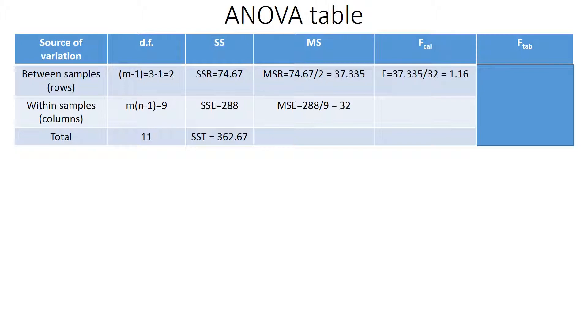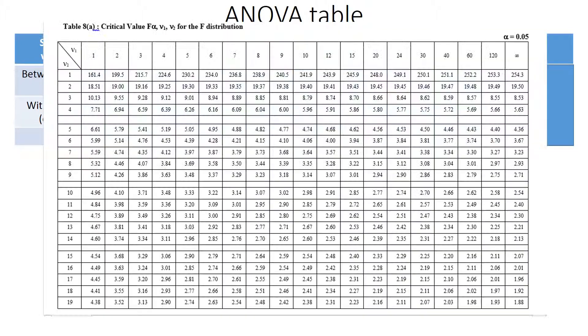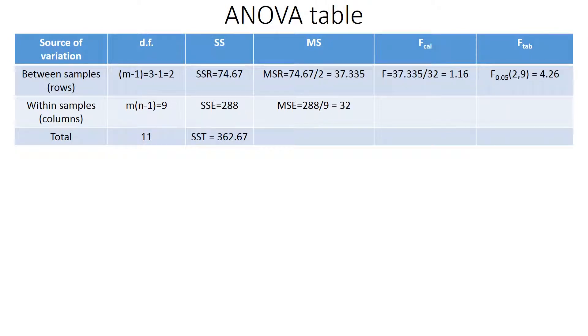Now let's go and compare the calculated value with our values from the F table. We had degree of freedom 2 and 9, right? 2 for M minus 1 equals 2, and the second is degree of freedom 9. So 4.26 is what we get from this table.